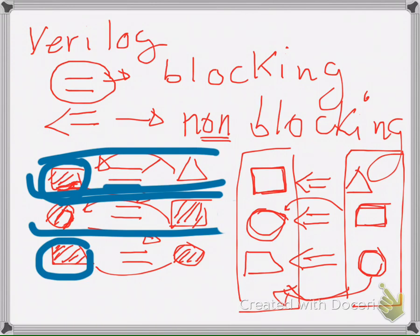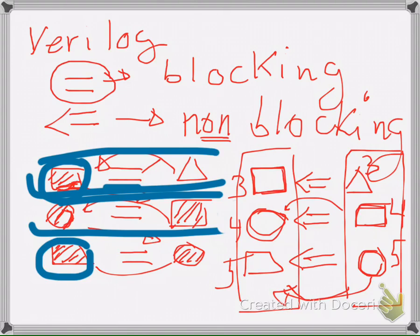Because of this snapshot behavior, non-blocking assignments allow you to swap two values without needing a temporary variable. In blocking assignment, a swap requires a temporary variable to hold one value. But with non-blocking, if A = 3, B = 4, and C = 5, you can write A <= B, B <= C, C <= A, and all three get their new values simultaneously — no intermediate temporary variable needed.